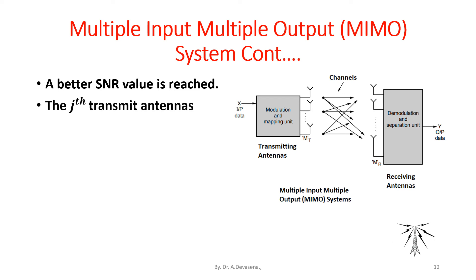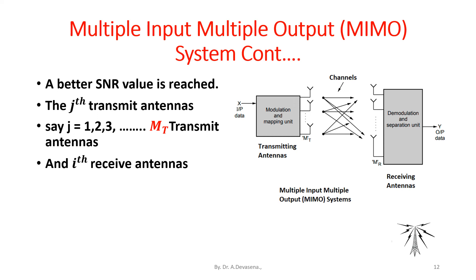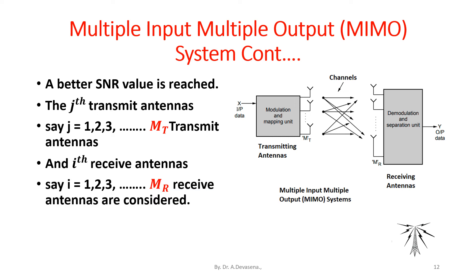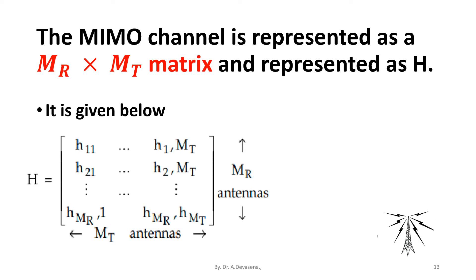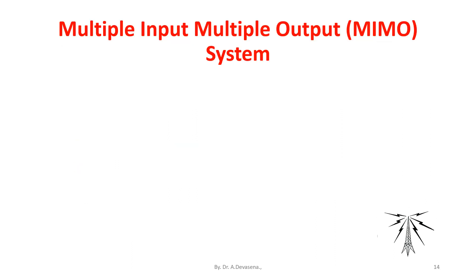The J-th transmit antennas, where J = 1, 2, 3, ... up to M_T, and the I-th receive antennas, where I = 1, 2, 3, ... up to M_R, are considered. The MIMO channel is represented as an M_R × M_T matrix H, where h_ij represents a complex Gaussian random variable.